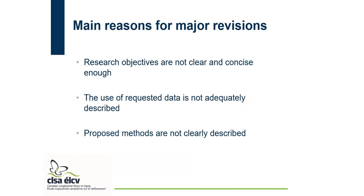The main reasons for major revisions — which allow 21 days to resubmit — are research objectives that are not clear and concise enough, the use of requested data not being adequately described, and proposed methods not being clearly described. We ask applicants to rewrite those sections.